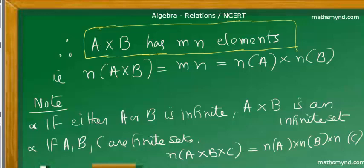Two interesting points: first, we have dealt with sets having finite elements — what if the elements are not countable? If either set A or set B is infinite, then the ordered pairs would be infinite, meaning A × B gives an infinite set. Second, for three sets, the cardinal number would be n(A) times n(B) times n(C).